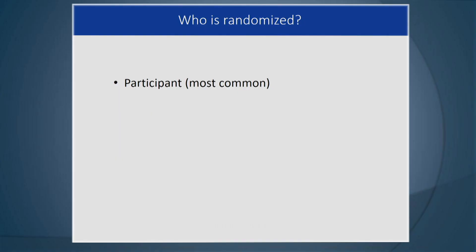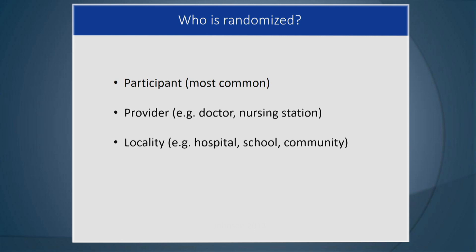So, who is randomized? The most common is participants — people. But that's not the only way. You could have a provider, like a doctor or nursing station, that gets randomized — that's cluster randomization, which we'll cover in part four. Or it could be a locality: a hospital, a school, or a community. But in general, participants — people — are randomized.